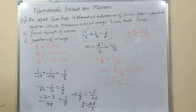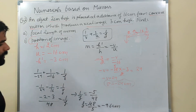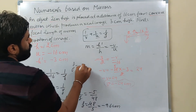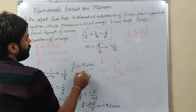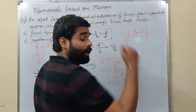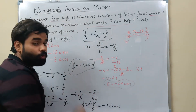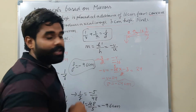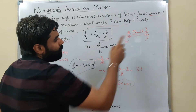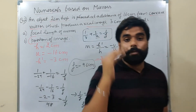Solving this gives focal length f = -9.6 cm. Notice the answer automatically came negative. That's correct because concave mirror's focal length is always negative. If a negative sign is not coming for a concave mirror, it means we made a mistake somewhere - we can recheck. So focal length = -9.6 cm and position of image = -24 cm.